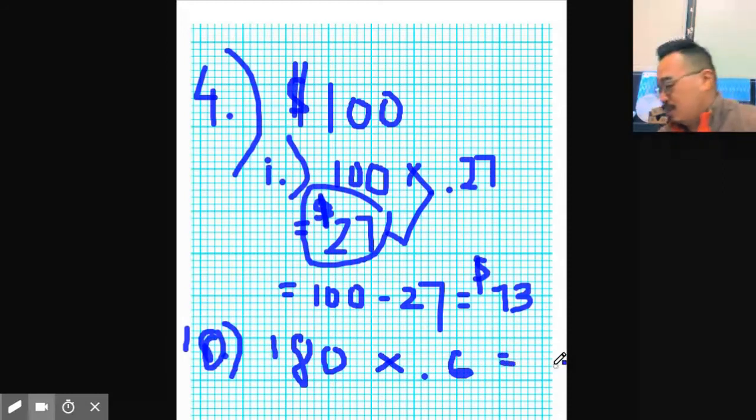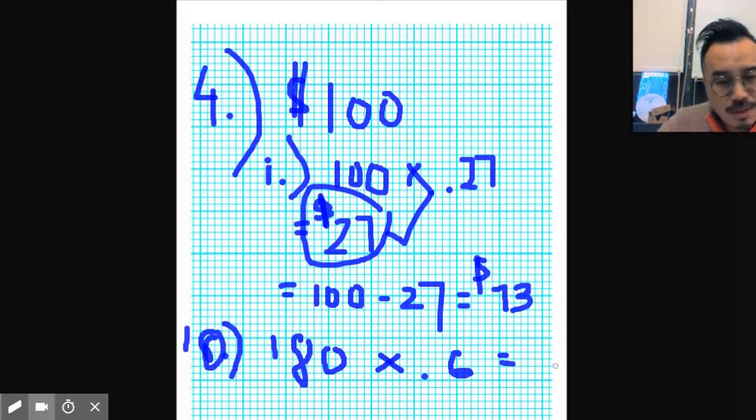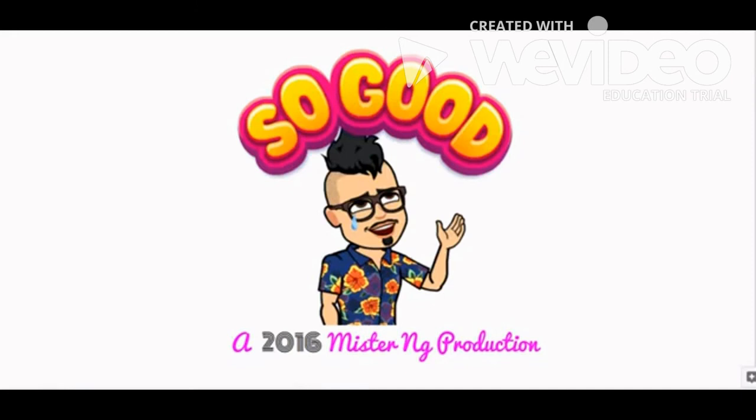Alright, what is that? Okay, I can't do this in my head right now, driving me crazy. 180 times 0.6 equals 108. Okay, 180 dollars becomes 108. Okay, alright. OMG, that was so good.